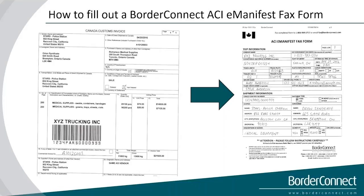Now, this is how to fill out a BorderConnect ACI manifest fax form. This one is going into Canada, as opposed to the last one, which was going into the US.